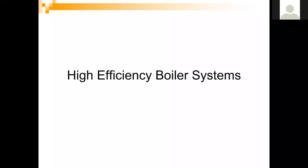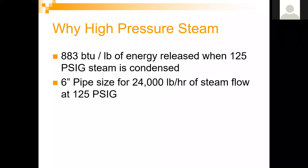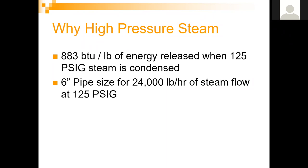We'll be talking about some of our high-efficiency steam boiler systems today. Why do people use high pressure steam? There are basically 883 BTUs per every pound of energy released when 125 PSIG of steam is condensed — when we go through that phase change from live steam back into water. A six-inch pipe can handle 24,000 pounds per hour of steam flow at 125 PSIG, so we can get a lot of BTUs through a six-inch pipe. That's why people use high pressure steam — to deliver a lot of BTUs to a concentrated area at high temperature, roughly 360°F at saturated conditions.